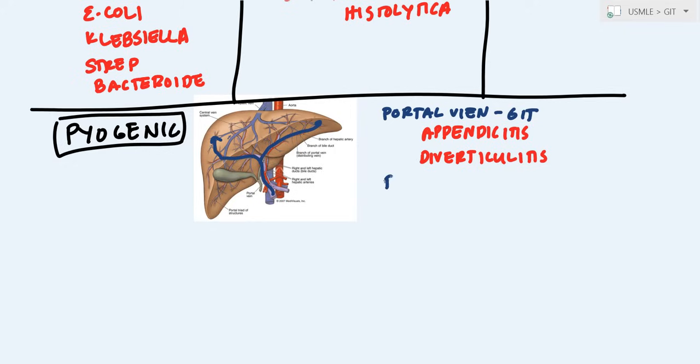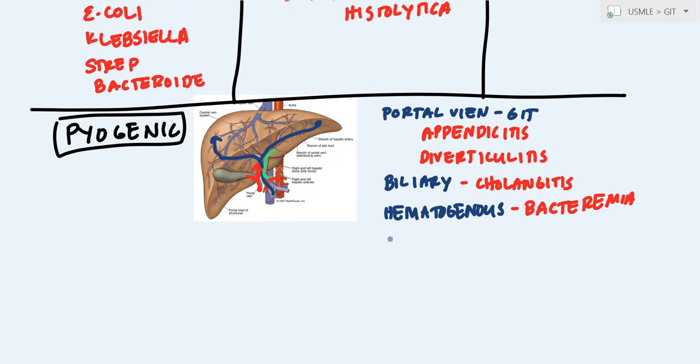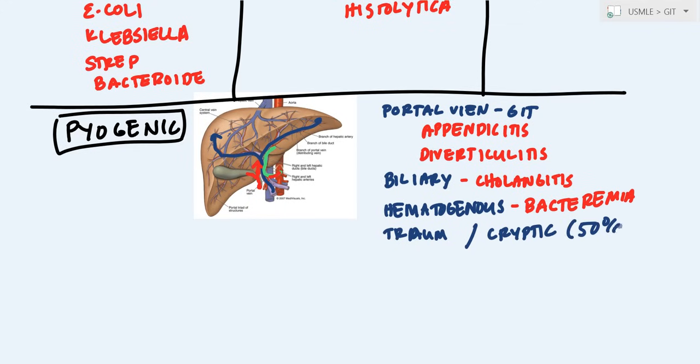Then the other one is going to be via the biliary tract. So this is most commonly due to cholangitis. You have a biliary tract, you get a cholangitis here, and you have your gallbladder, and that can also cause it to go up that way. And finally, you can have it through hematogenous spread. This is going to be any time there's bacteremia or anything along those lines. That's going to come from the celiac trunk and go up into the liver. Now, of course, you have two other ways. One is going to be trauma, and the other one is pretty much unknown—they call it cryptic. Actually 50% of the times it's going to be cryptic. So this is the general etiology.